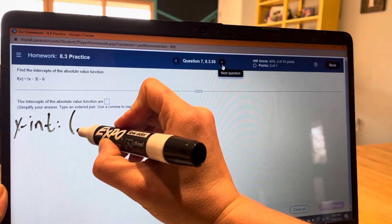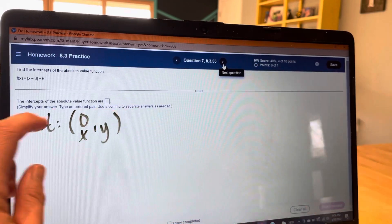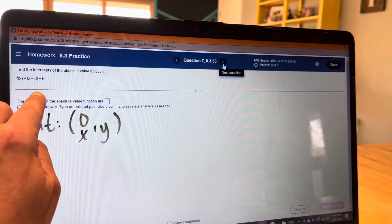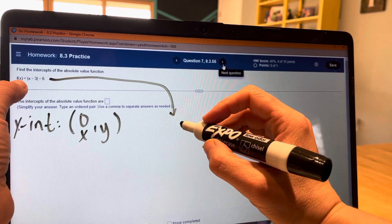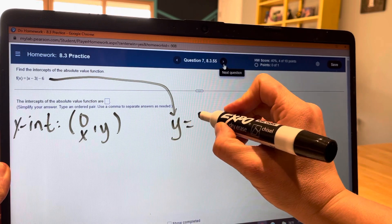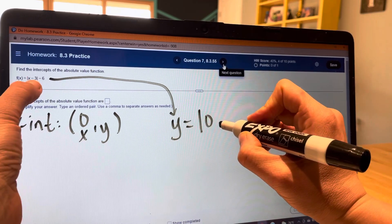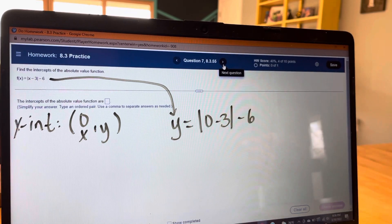Remember to find the y intercept, x comma y, we're going to plug in 0 for the x in this function. So I'm going to come over here. I'm changing that f of x to be y, but they mean the same thing. y equals, I'm going to plug in 0 for the x, minus 3, minus 6. We simplify.